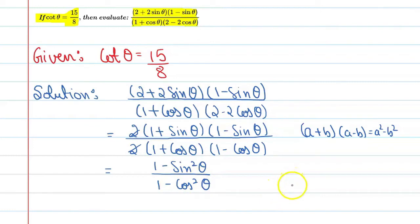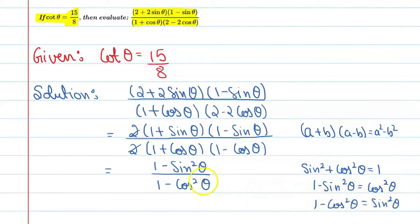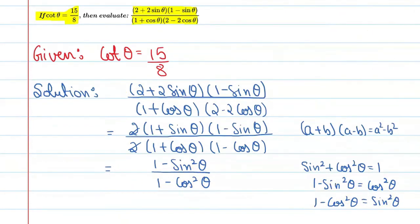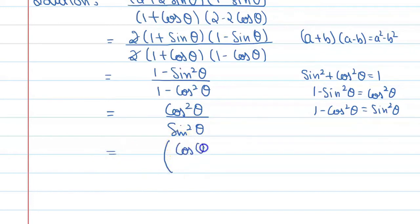Now, see here we can talk about trigonometric identities. We know that sine squared theta plus cos squared theta is equal to 1. So here we can say that 1 minus sine squared theta is equal to cos squared theta. So in the numerator we can write cos squared theta, and in the denominator this is sine squared theta. Overall you can write this as cos theta upon sine theta, raised to power 2.